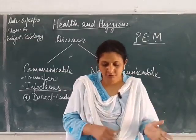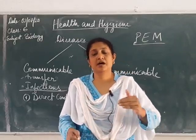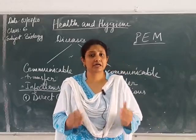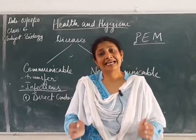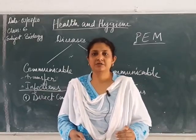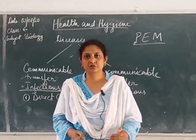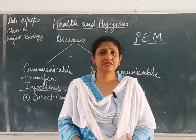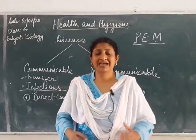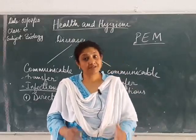Kwashiorkor occurs to children above one year but within three years of age, when they are not getting enough amount of food. Marasmus occurs to children below one year of age, again for the same reason — the child is not getting enough nutrition, enough protein, or enough carbohydrate.